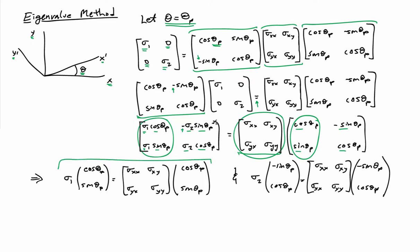And then I can take this column here and consider it the product of the stress matrix times the second column of this matrix here. And that gives me this second relationship here.